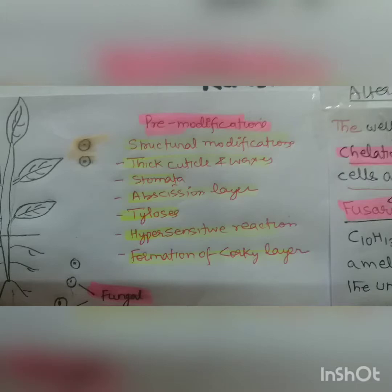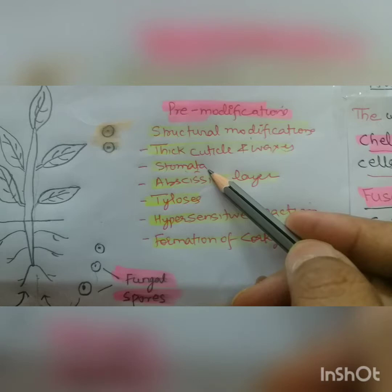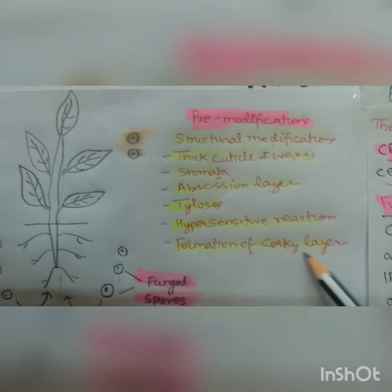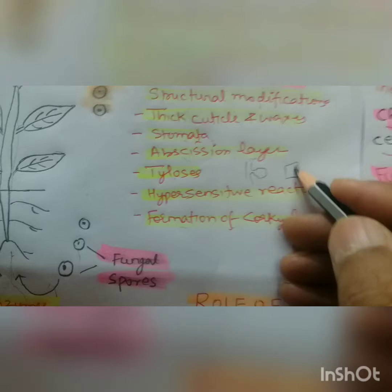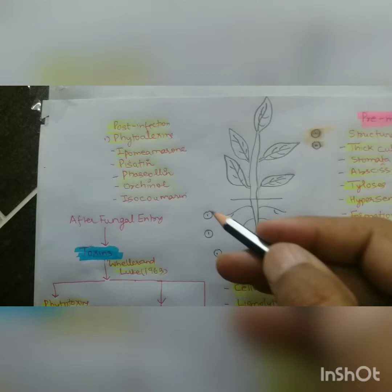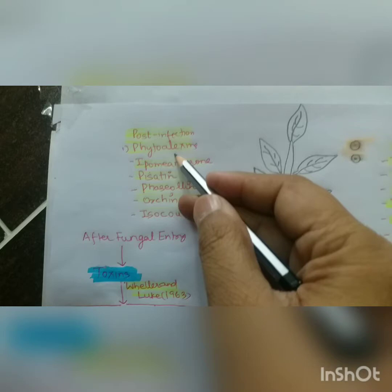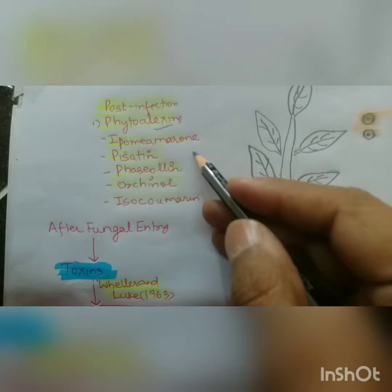Besides these, we have proteolytic enzymes also. As the fungus is about to enter the plant, the plant undergoes pre-modifications. First are structural modifications: thick cuticle and waxes, stomata — like in citrus mandarin variety — abscission layer, formation of corky layer, tylosis in xylem vessels. Then hypersensitive reactions in which the cell becomes necrotic. After that we did chemical defenses, and after infection the plant creates phytoalexins.